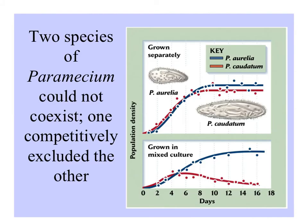When two species of Paramecium were cultivated singly, they both reached a maximum and populations didn't grow beyond that. But when grown in mixed culture, one outcompetes and competitively excludes the other.